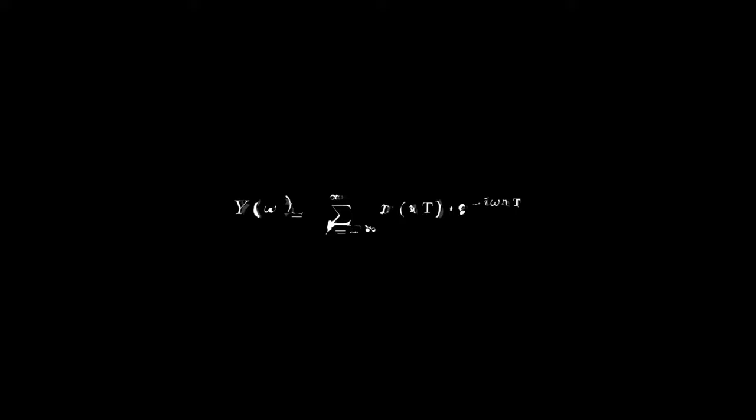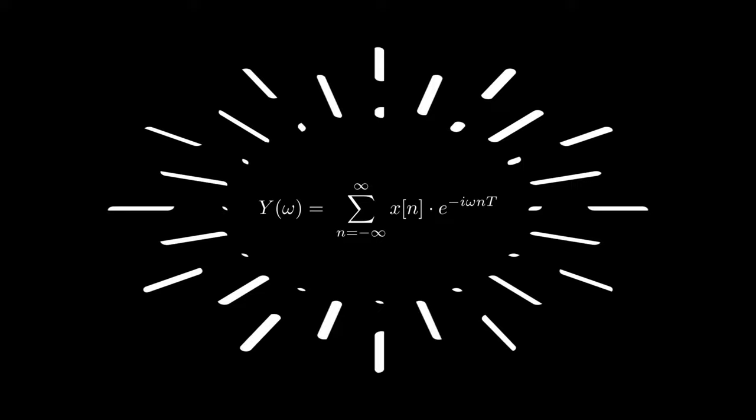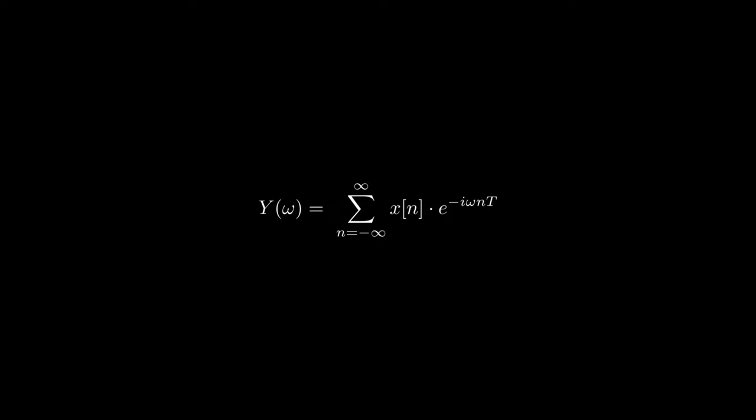Let's denote x of nt as x of n with square brackets. We will now get our final result, which is, in fact, the definition for the FT of discrete time signals, often called DTFT.